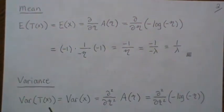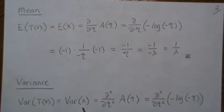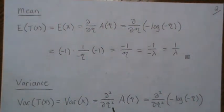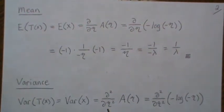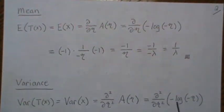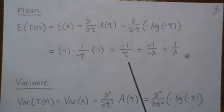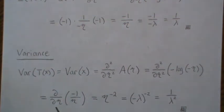Now the variance of our sufficient statistic, in this case the variance of X, is the second derivative of our log partition with respect to eta. Our log partition's here. We took the derivative once and got this value, so we're going to just plug that in and take the derivative of it.